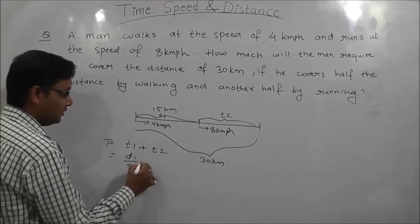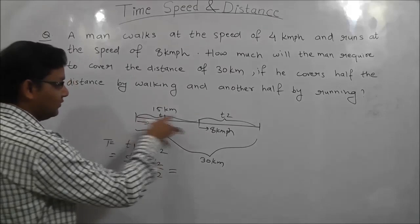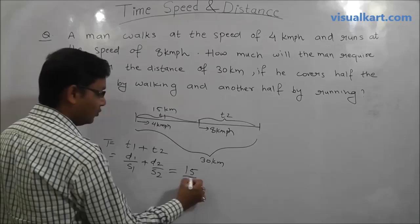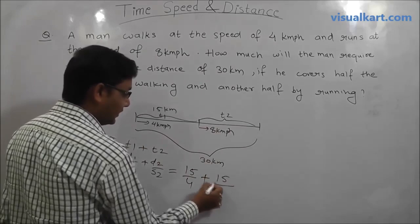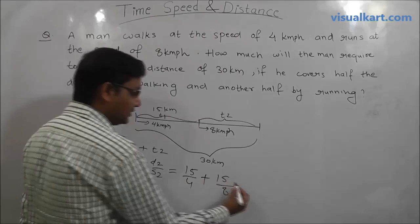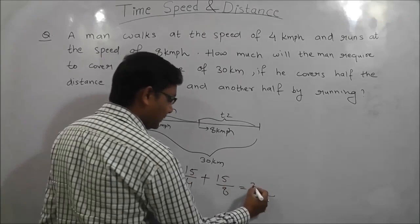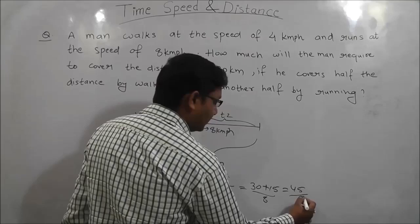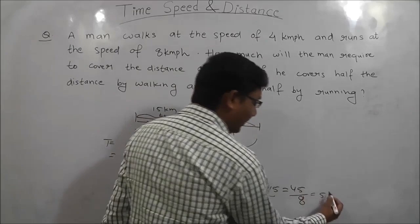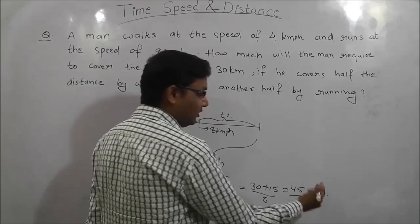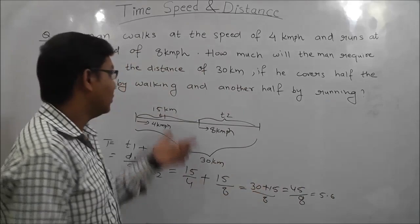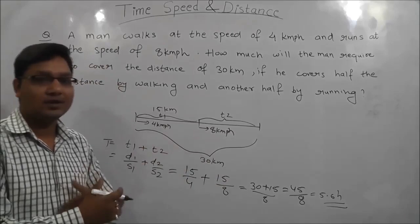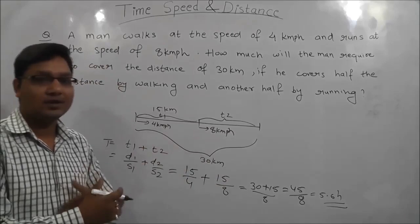T1 = 15/4 and T2 = 15/8. Taking LCM of 8, we get (30 + 15) upon 8, that is 45/8. Dividing, 8 into 5 gives us approximately 5.6 hours. So the man will cover the total distance of 30 km in 5.6 hours. This is a basic question — just remember the concept and the formulas.